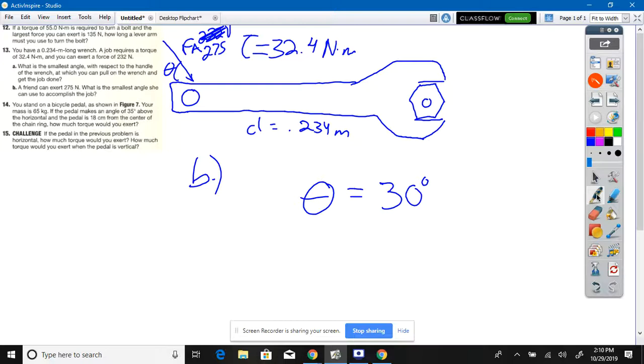What that means is the person with less force is going to need it to be more closer to parallel. A stronger person can turn it with pointing up like that a little bit more, but the person that's not as strong needs a little bit closer to parallel.